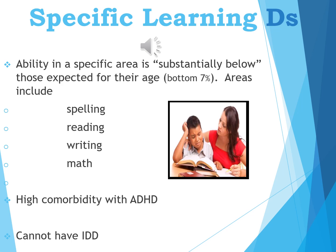Let's consider specific learning disabilities. To be diagnosed, ability in a specific area must be substantially below what is expected for the child's age — specifically in the bottom 7%. Specific areas include spelling, reading (dyslexia is the term for the reading disorder), writing, and math. There is high comorbidity with ADHD. The individual cannot have intellectual developmental disorder; a child with a learning disability has normal or above-normal intelligence but struggles in one specific area. The earlier treatment begins, the better the outcomes — untreated, the child risks low self-esteem, stress, academic failure, and dropping out.